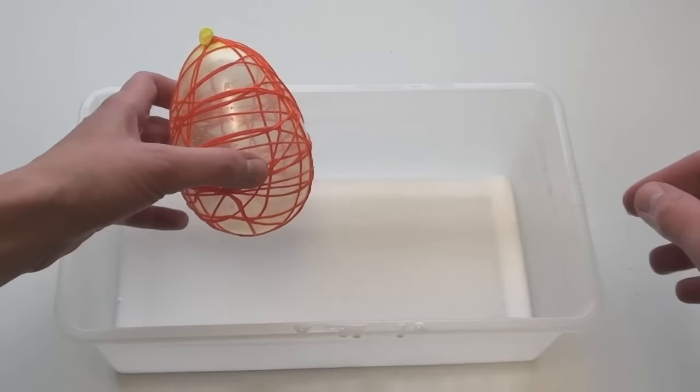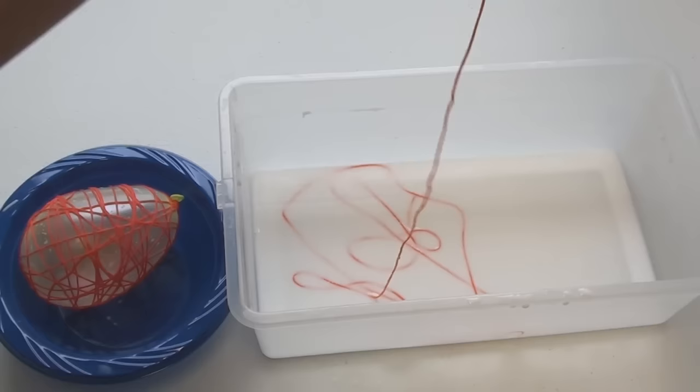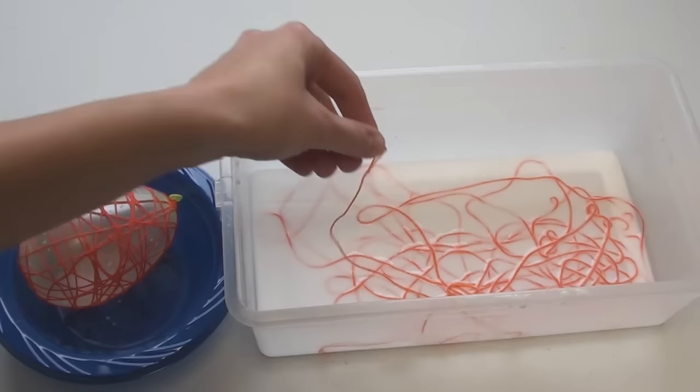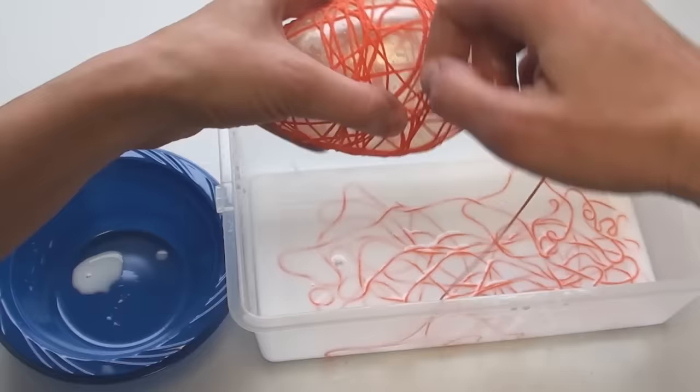Once you have completed the first embroidery skein, put your egg down and repeat the process of placing the second skein of embroidery floss into the glue mixture. As before, just lay the string into the mixture and try to avoid tangles or knots. Next, pick up your egg and place this beginning end wherever you want. Then continue with wrapping the string around the balloon. Try to fill in any large spaces with string.